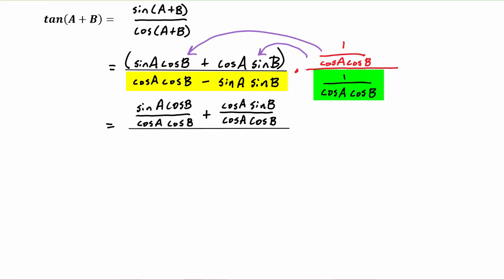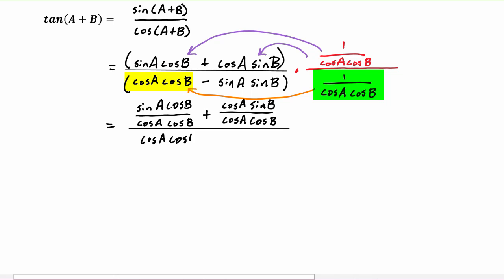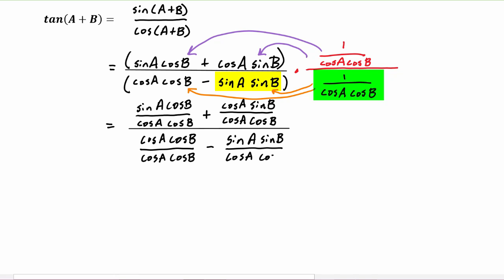Next we'll look at the denominator and we have to once again distribute. Distributing to the first term we get cosine a cosine b divided by cosine a cosine b, then we have this minus sign and we distribute to the second term and get sine of a sine b divided by cosine a cosine b.